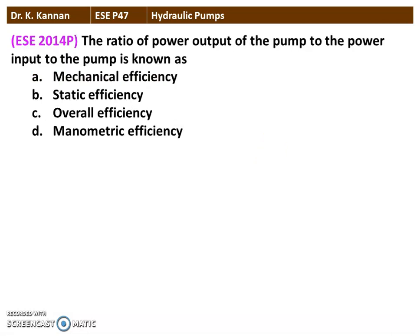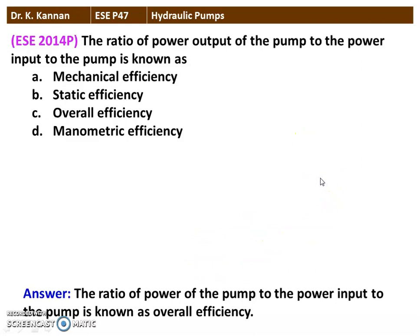The next question from the 2014 question paper: the ratio of power output of a pump to the power input of the pump is known as — Mechanical Efficiency, Static Efficiency, Overall Efficiency, or Manometric Efficiency? The answer is Overall Efficiency. The ratio of power output to power input of the pump is known as Overall Efficiency.